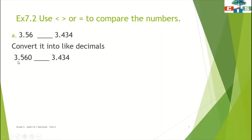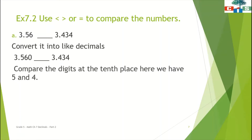Now we compare. The whole number is 3 on both sides. Next we compare the digit at the tenths place: here we have 5 and here we have 4. Since 5 is greater than 4, it means 3.560 is greater than 3.434.